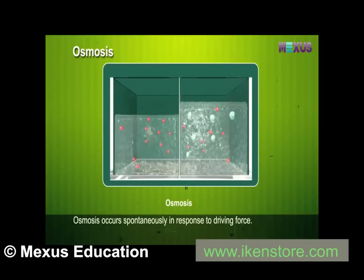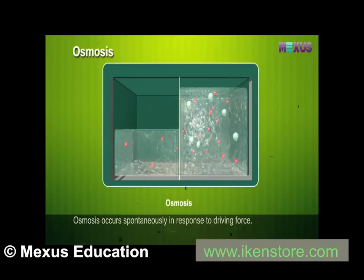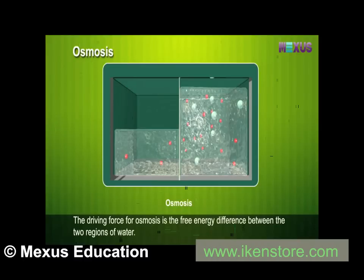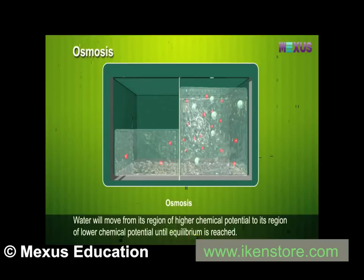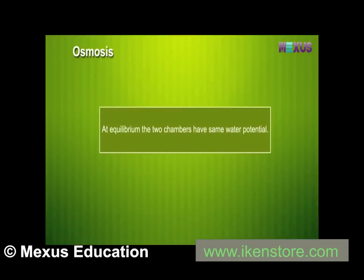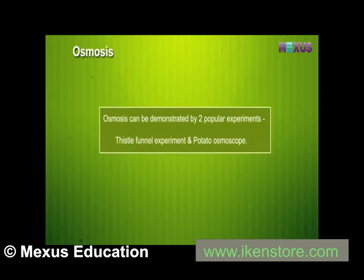Osmosis occurs spontaneously in response to a driving force. The driving force for osmosis is the free energy difference between two regions of water, expressed as a chemical potential gradient or water potential gradient. The net direction and rate of osmosis depends on both the pressure gradient and concentration gradient. Water moves from its region of higher chemical potential to its region of lower chemical potential. At equilibrium, the two chambers have the same water potential.